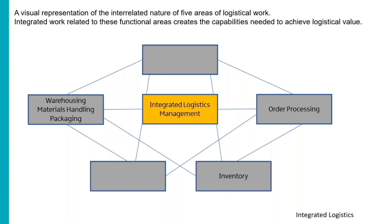The inventory requirements of a firm are directly linked to its facility network and desired customer service level. The objective of an inventory strategy is to achieve desired customer service with the minimum inventory commitment — it's all about right quantity, right time. Excessive inventories may compensate for deficiencies in basic logistics system design, but will ultimately result in higher-than-necessary total logistics costs. The goal is to achieve maximum inventory returns: the right amount of material, turning that material over as rapidly and quickly as possible.